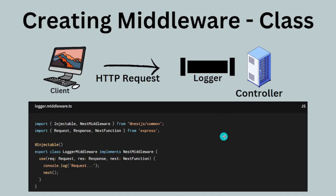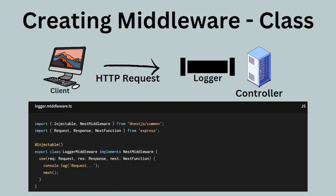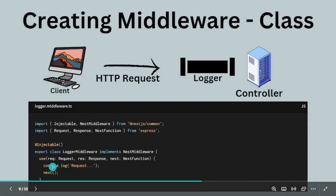Creating a class middleware is pretty simple. You first create a class and export it. The class needs to implement NestMiddleware — that is the core of it. It should also have an Injectable decorator, which we studied in our dependency injection lectures. Injectable lets the class be injected wherever you want it to be injected.